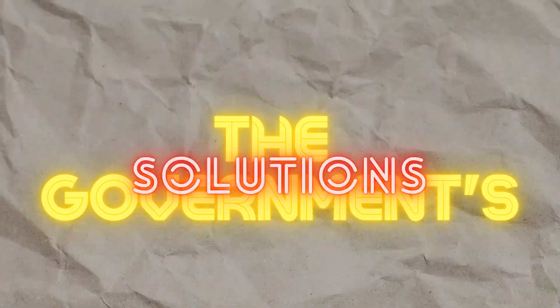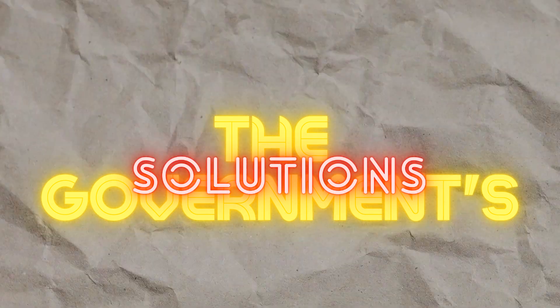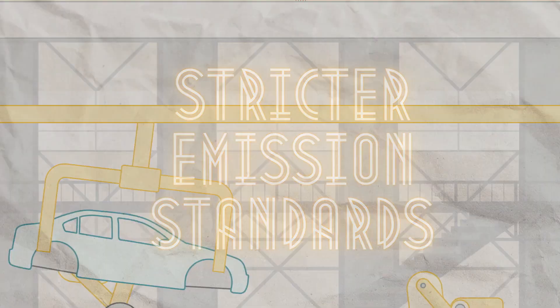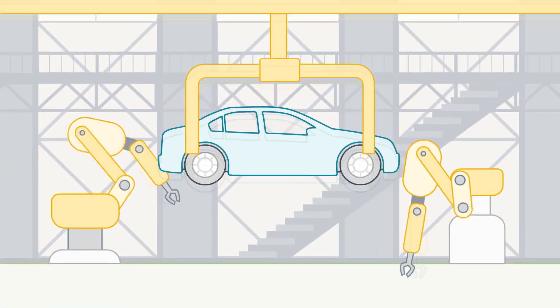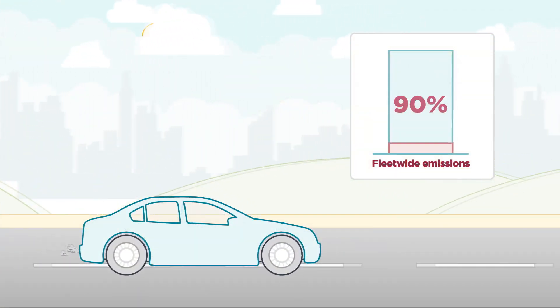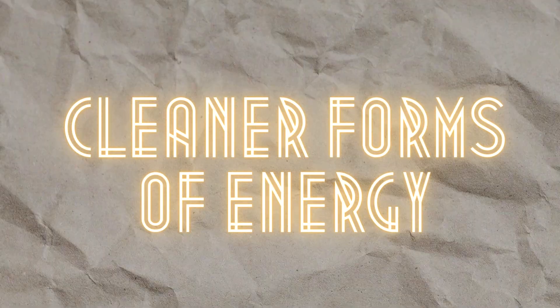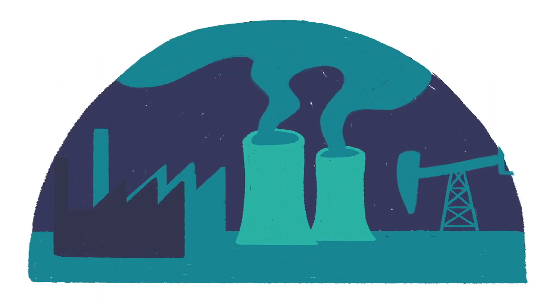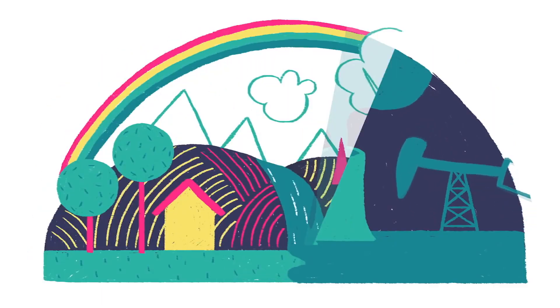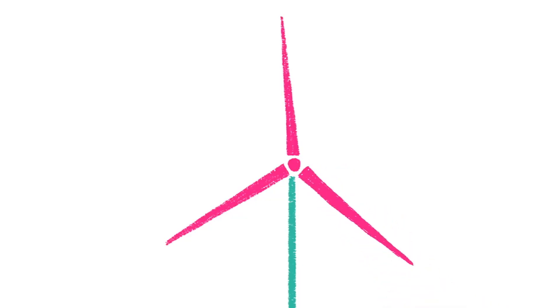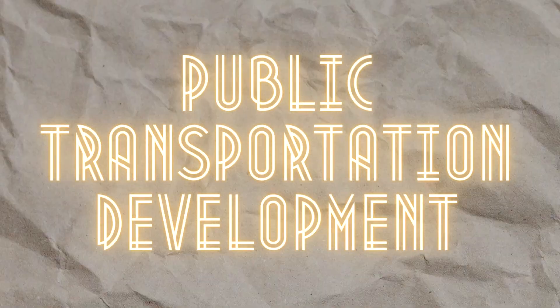There are several ways the government of the Philippines is addressing urban air pollution. First, implementing stricter emission standards — the government has implemented stricter emission standards for vehicles and power plants to reduce harmful pollutants released into the air. Second, promoting cleaner forms of energy — the government is promoting the use of solar and wind power to reduce reliance on fossil fuels, which are a major source of air pollution.